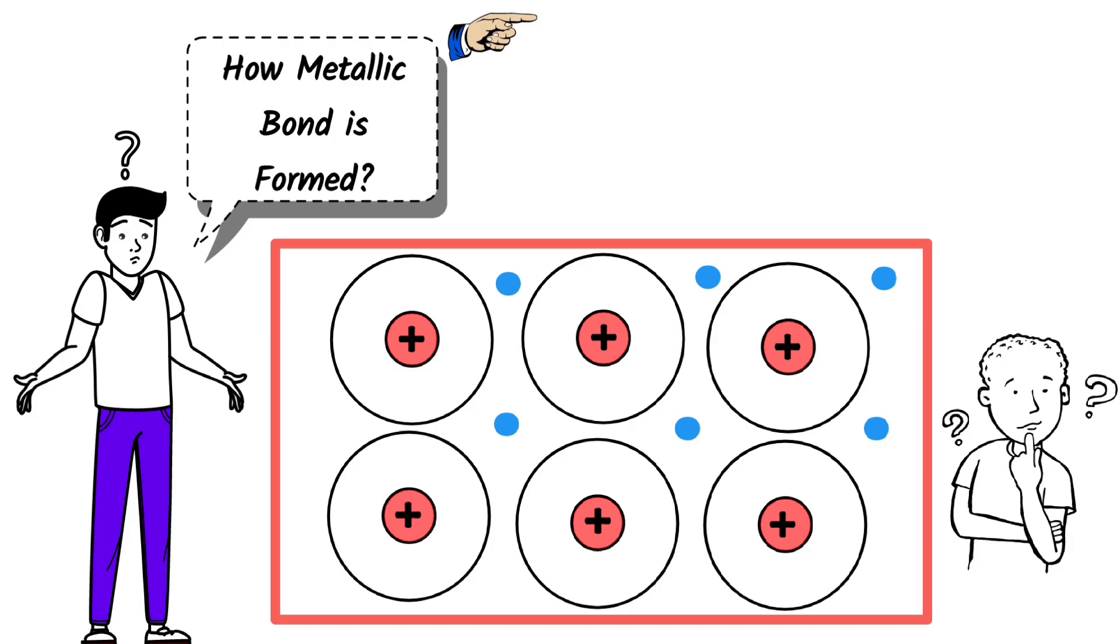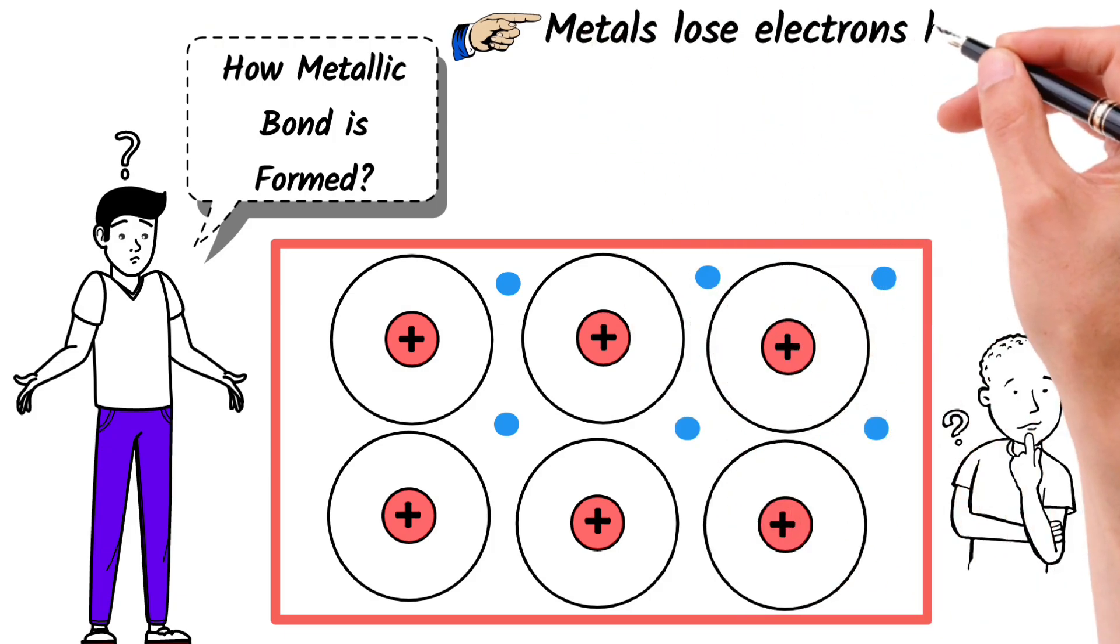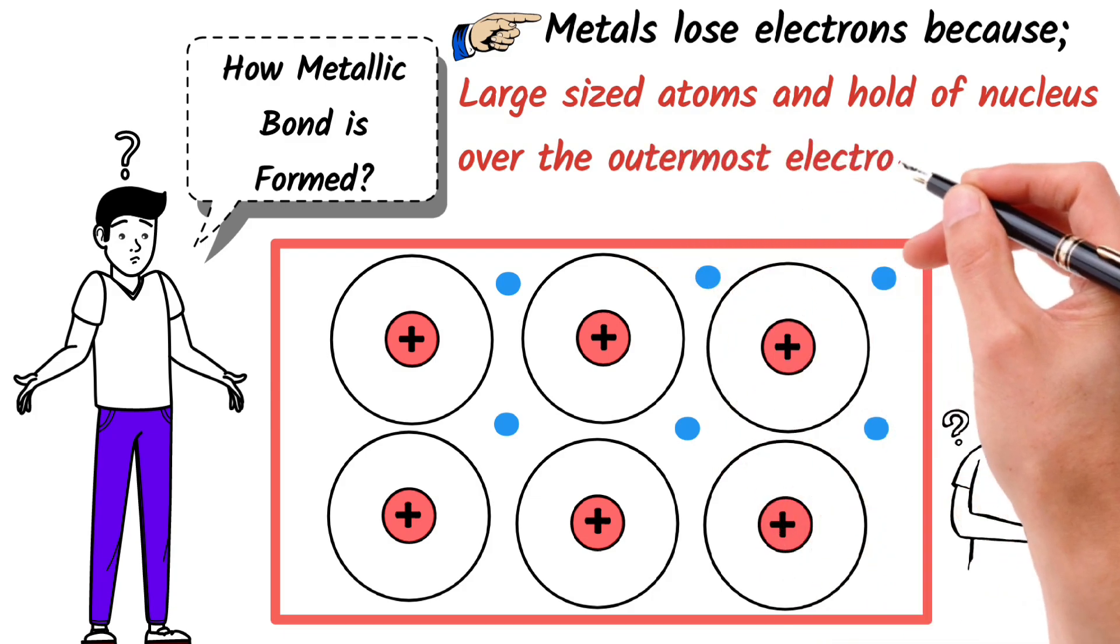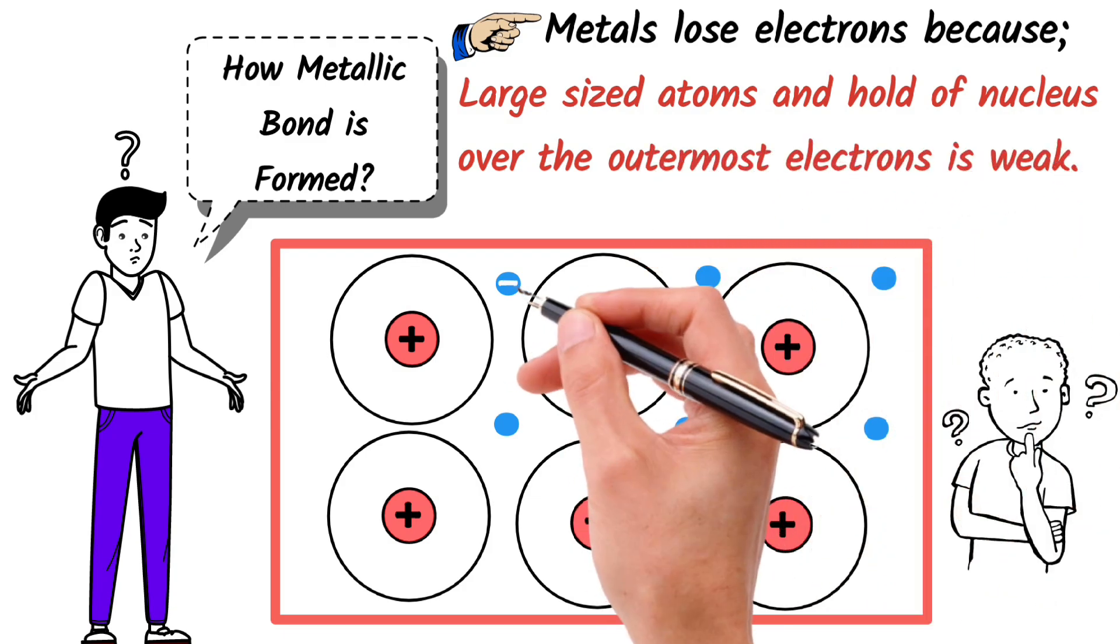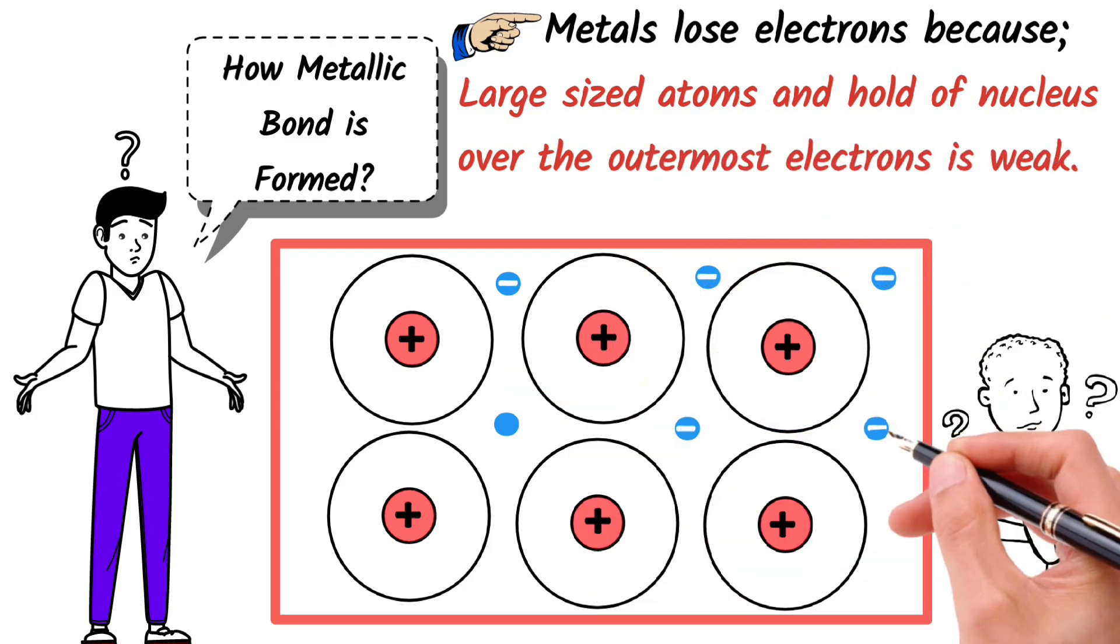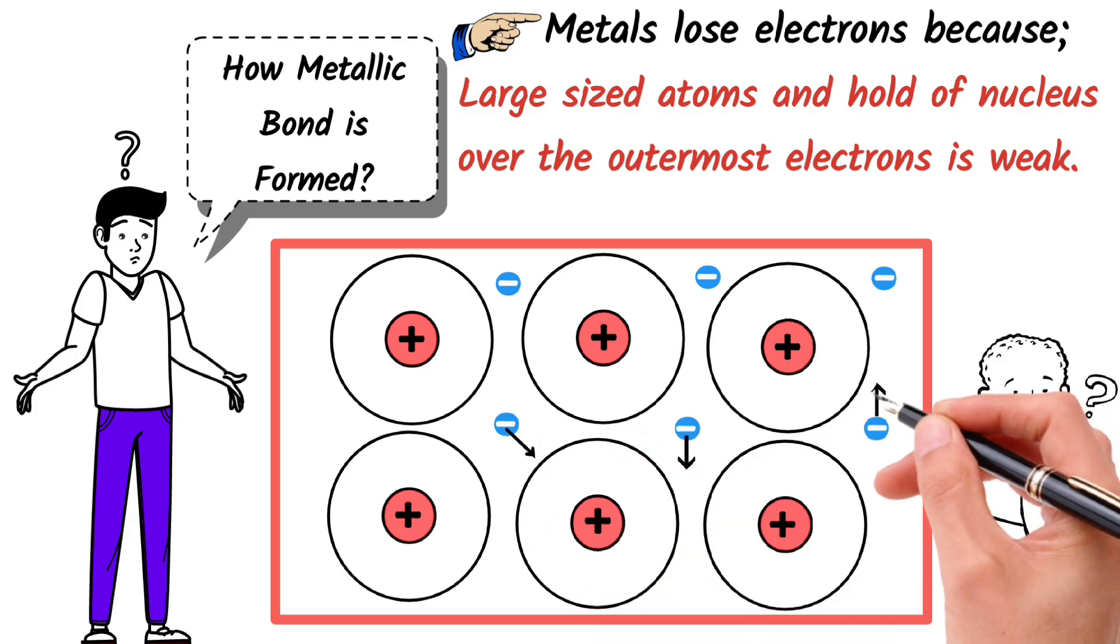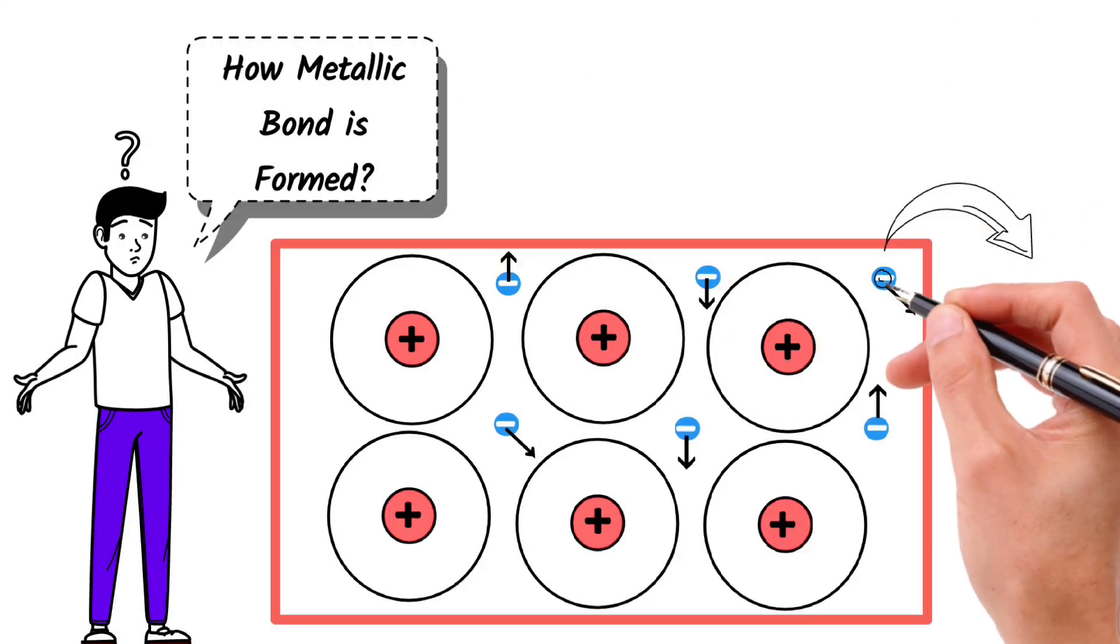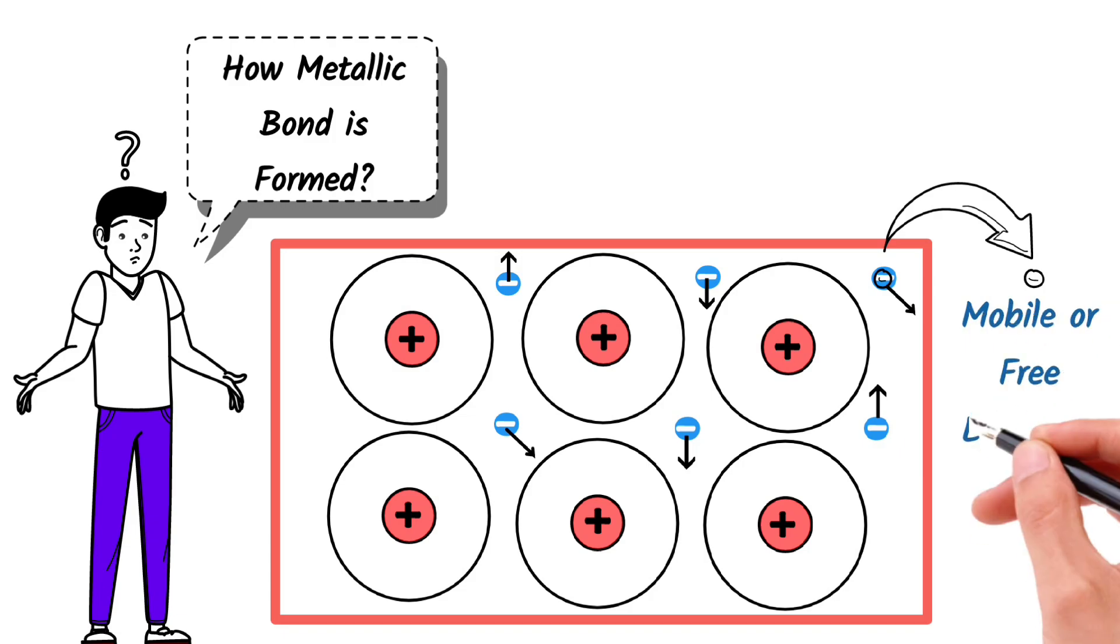Why do metals lose their electrons? Metals lose their electrons because they are large-sized atoms, and the hold of the nucleus over the outermost electrons is weak. These negatively charged electrons of all metal atoms move freely in the spaces between atoms of a metal. Now these electrons are known as mobile or free electrons and are not attached to any particular atom.